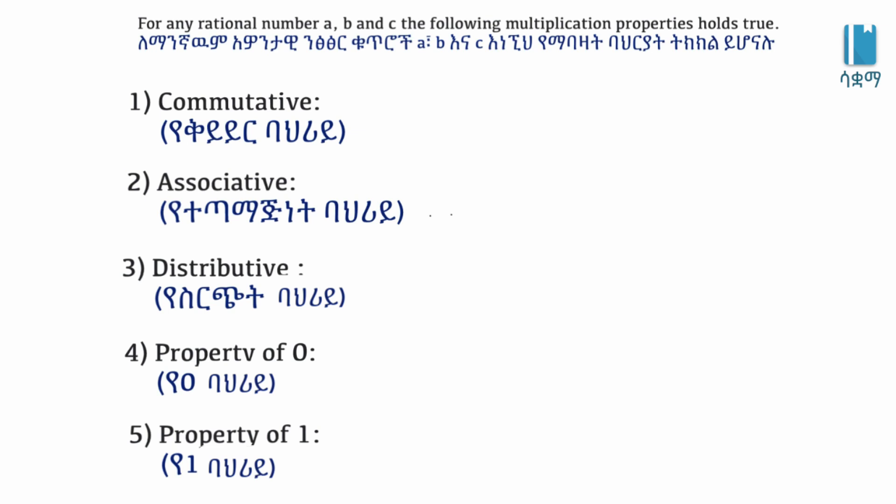Let's say A, B, and C. For the commutative property: A times B equals B times A. For example, 1 over 2 times 3 over 2 equals 3 over 2 times 1 over 2.